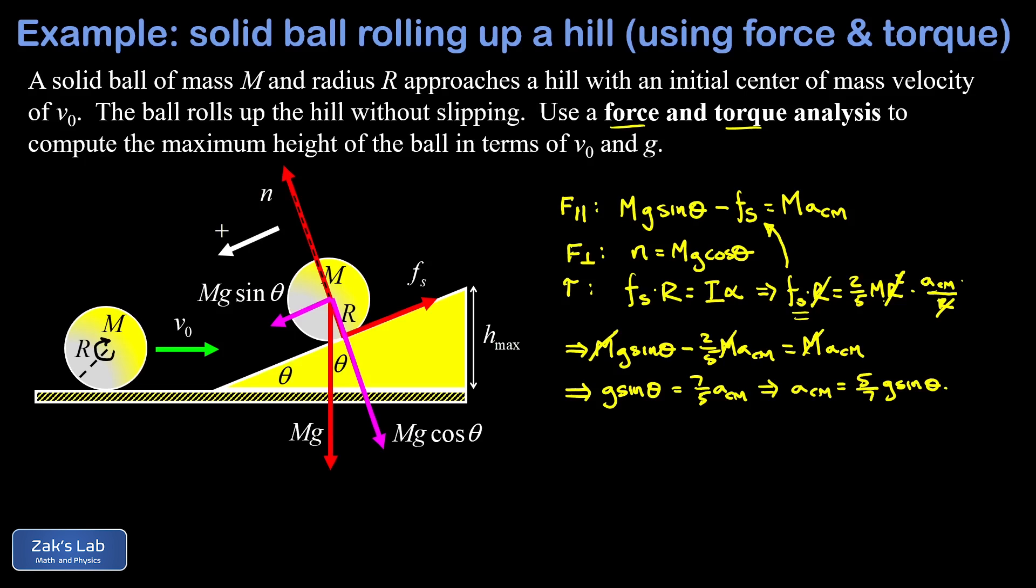So now what I want to do is take that acceleration, and remember that points down the ramp, and I want to apply kinematics to this to relate to the maximum height. Well I need to talk about that in terms of a maximum rolling distance first, and I'll call that little d. So the kinematics formula that I have in mind here is the time independent one where I can write v² = v₀² + 2ad if we assume an initial position coordinate of zero.